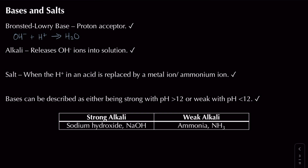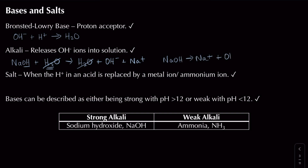Taking sodium hydroxide as an example of a strong base and alkali: it dissolves in water, and because it has OH⁻ it accepts a proton from water, forming water and leaving OH⁻ and sodium ions. After cancelling water from both sides, the equation simplifies to show sodium hydroxide dissociating to give sodium ions and hydroxide ions.